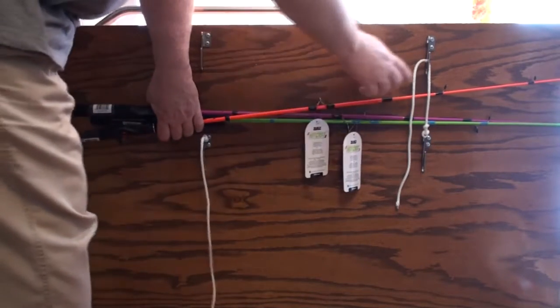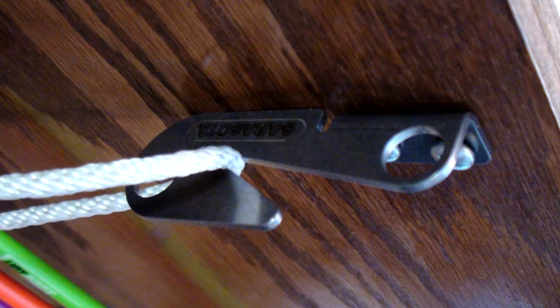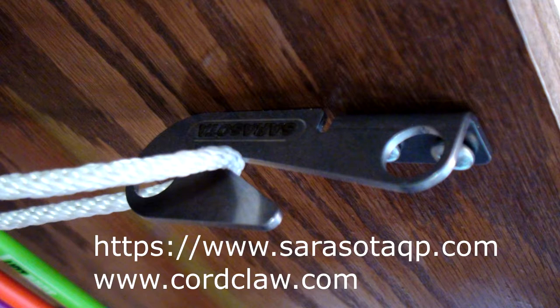To get your objects right away, just pull up the rope on each side, grab your objects and you're ready to go. Thank you and enjoy your single hook wall-mounted cord claw. To order yours, go to sarasotaqp.com or cordclaw.com. Thank you.